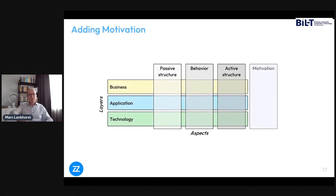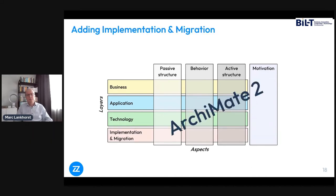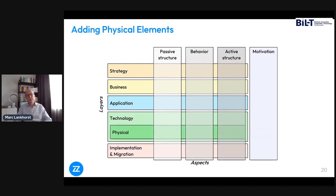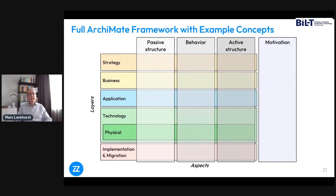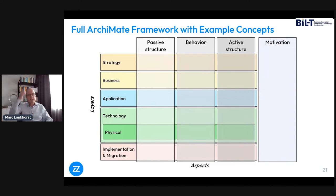In the first version of Archimate we subdivided the language into layers very common across multiple architecture approaches. In the second version it grew with motivation and implementation and migration concepts. In the current version three, we have a strategy layer at the top, which is the most relevant for business architects because that's where concepts like capability live.